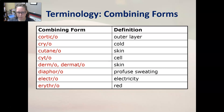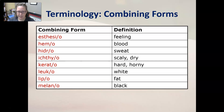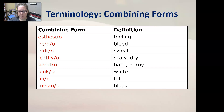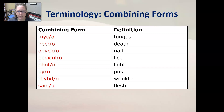Dermo and dermato also mean skin. Cyto is cell, diaphero is profuse sweating, electro is electricity, and erythro is red. Esthesio is feeling — think anesthesia, meaning not feeling. Hemo is blood, hydro is sweat, ichthyo is scaly or dry — and ichthys is the Greek word for fish, so that makes sense. Kerato means hard or horny or horn-like, leuco means white, lipo is fat, melano is black, myco is fungus.